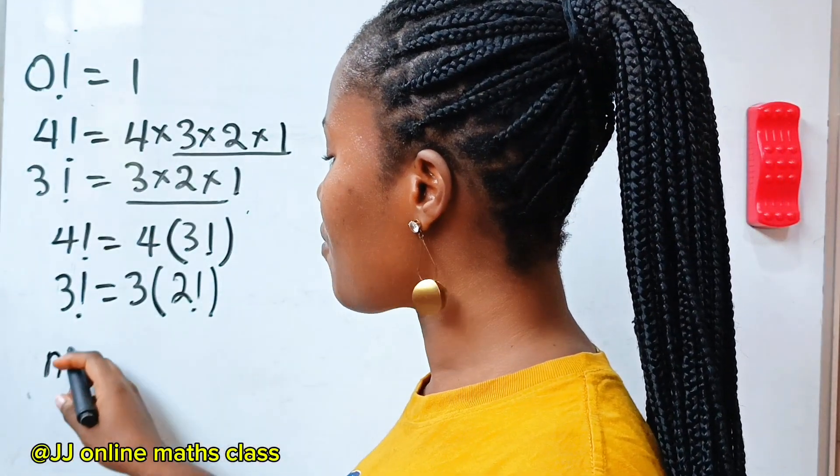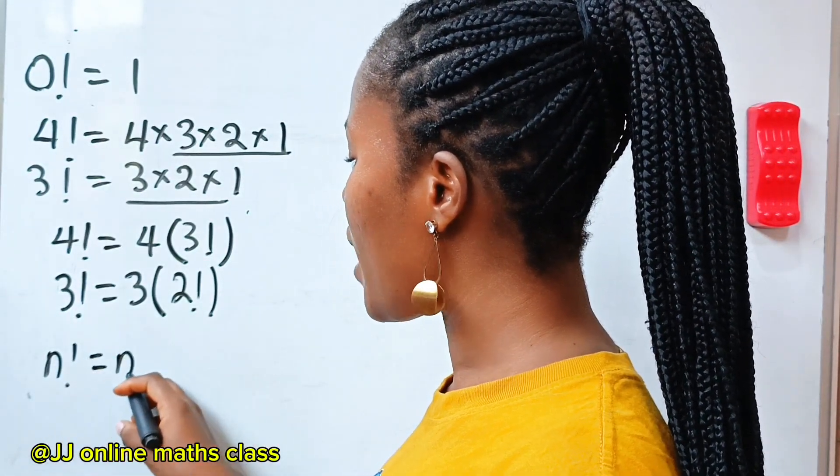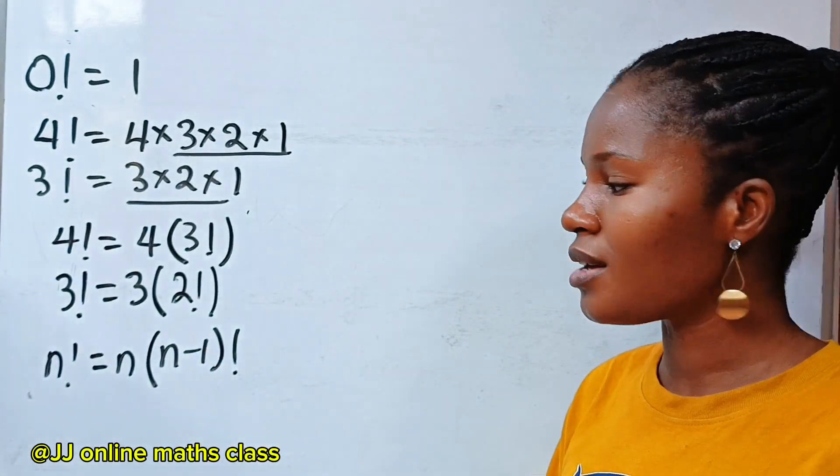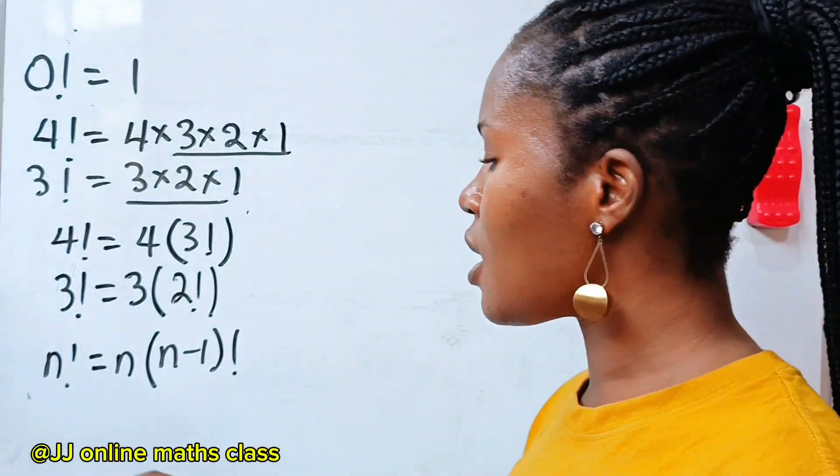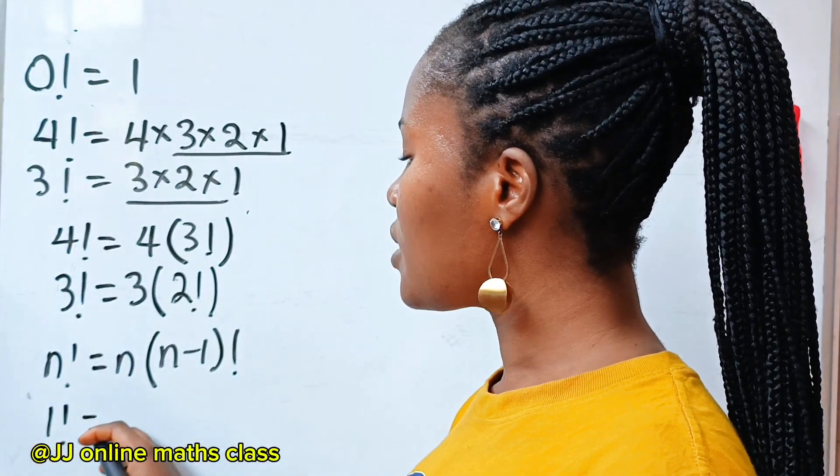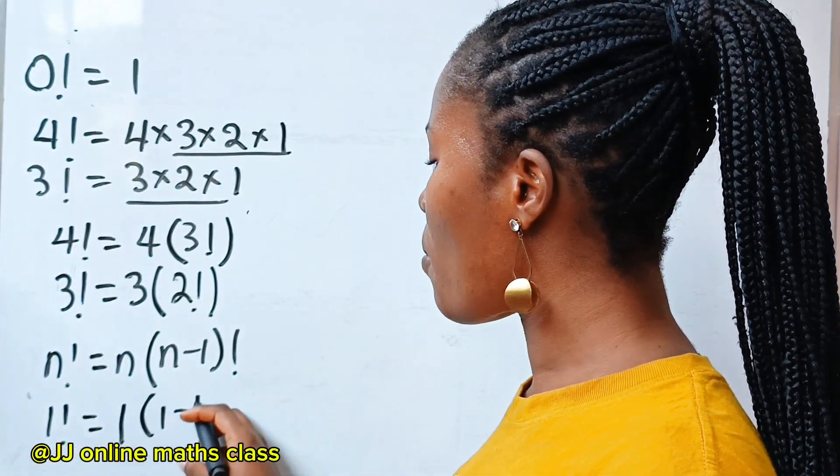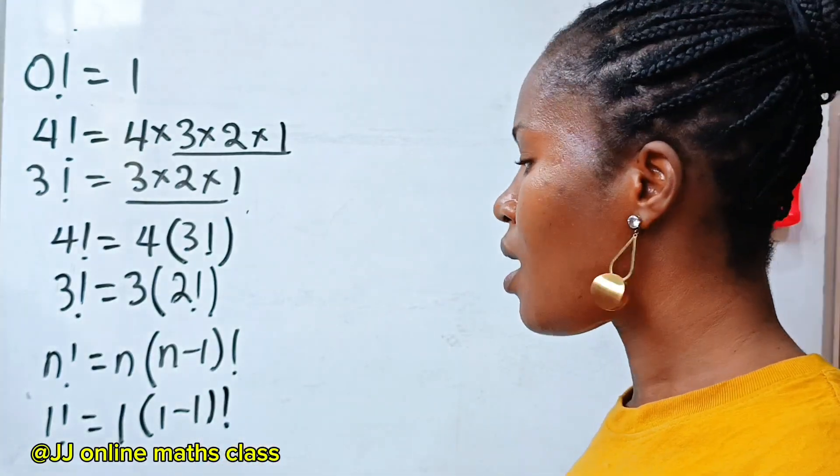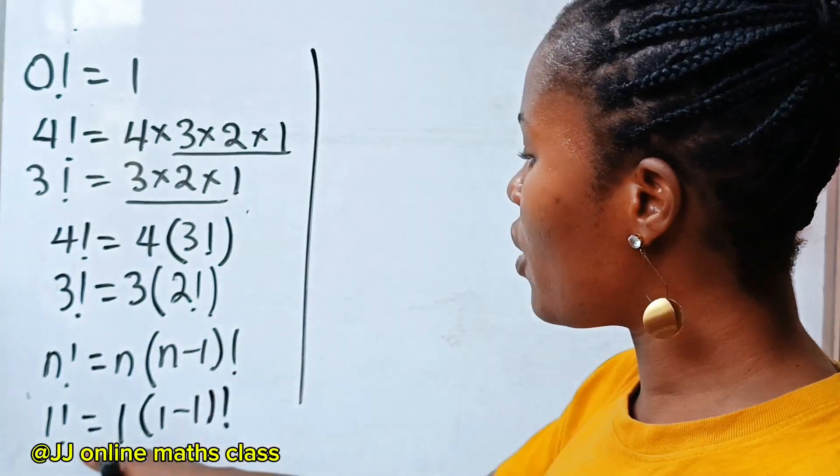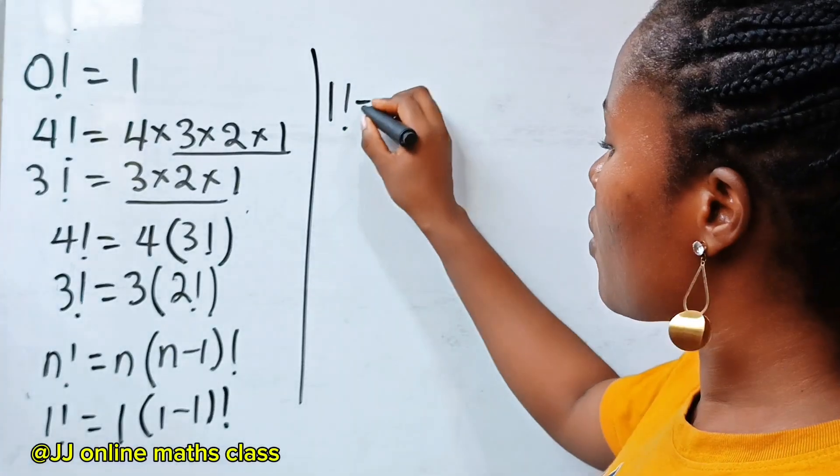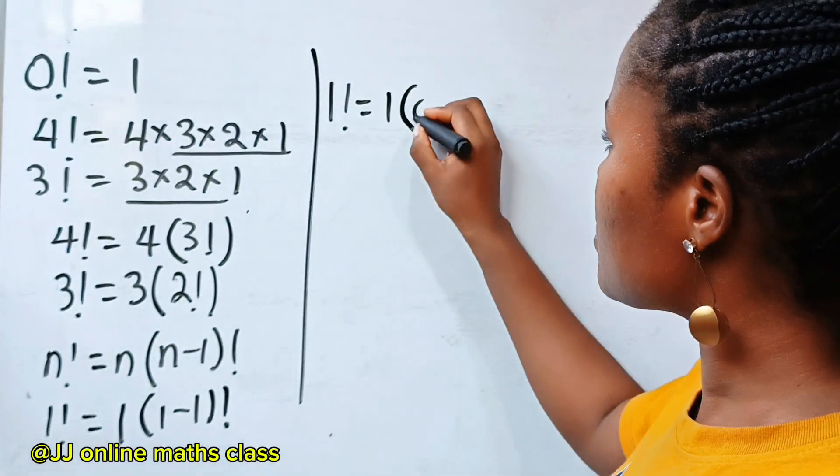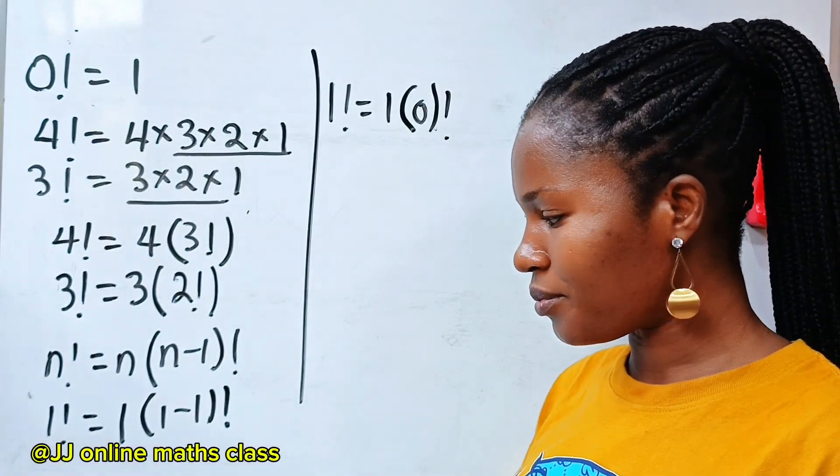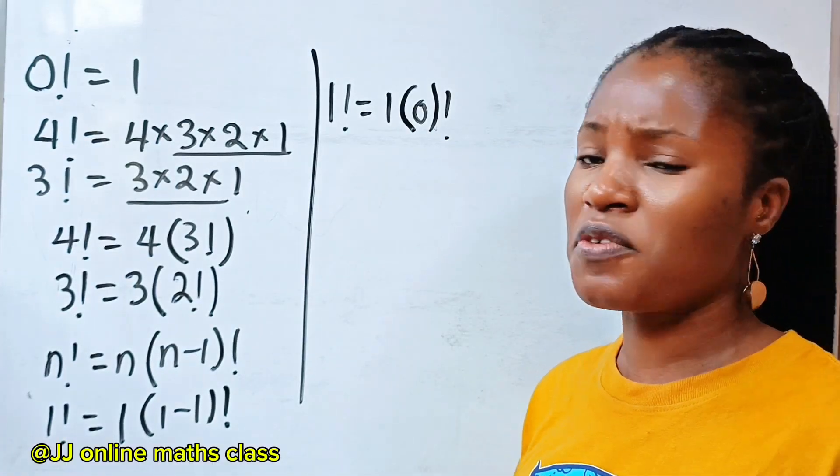So that simply means that n factorial is equal to n multiplied by n minus 1 factorial. You can see that. Now let us say 1 factorial is equal to 1 multiplied by 1 minus 1 factorial. 1 minus 1 factorial. So if we solve this, we are going to have 1 factorial is equal to 1 bracket 0 factorial. Or 1 multiplied by 0 factorial.